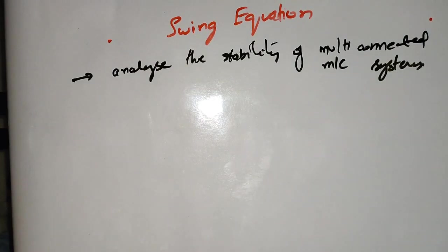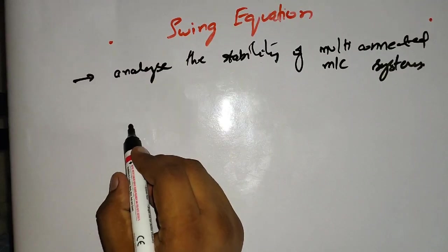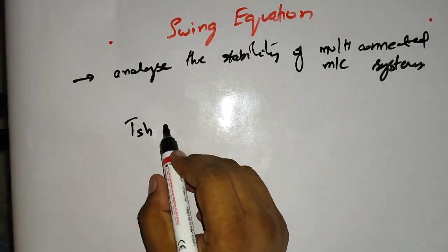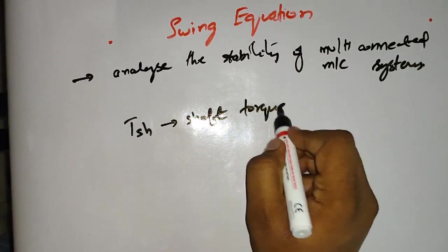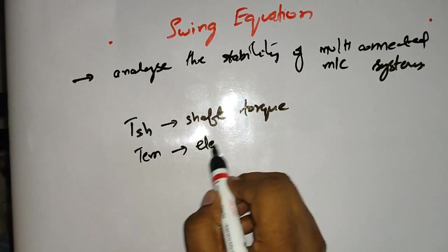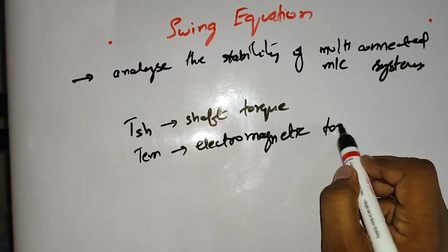When there are a lot of machines, to analyze the stability, we need the swing equation. For this, let us first generalize the information for one single machine. Let us consider a synchronous machine. Here, T_SH is the shaft torque, and T_EM is the electromagnetic torque for the synchronous machine.